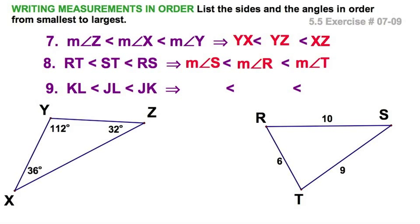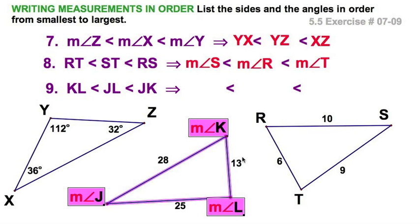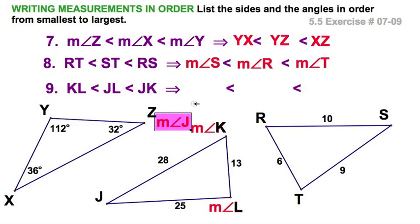You should be getting the hang of this by now. One more - we can see this 13 is the shortest side opposite the smallest angle. The next would be 25, opposite angle K. Finally, the longest side here, 28, is opposite the largest angle.